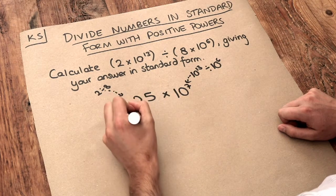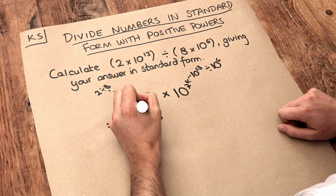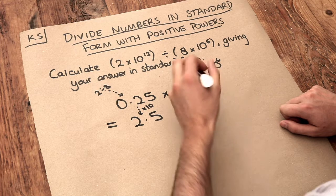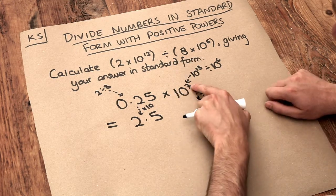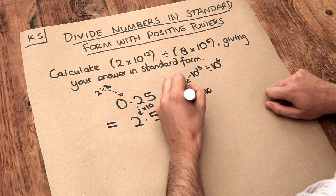So what we do is we just make this 10 times bigger, so it becomes 2.5. Now because this is 10 times bigger, to compensate, this has to become 10 times smaller so we end up with the same number. So if we divide this by 10, the index goes down by 1 and it becomes 10 to the 6.